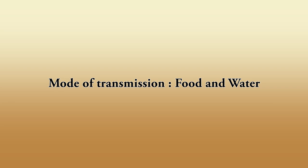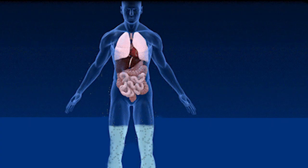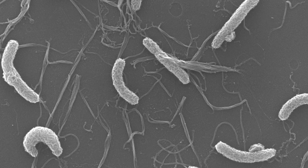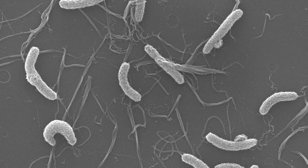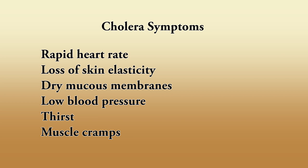Cholera is an infectious disease that causes severe watery diarrhea, which can lead to dehydration and even death if untreated. The mode of transmission is food and water. Vibrio cholerae, the bacterium that causes cholera, is usually found in food or water contaminated by feces from an infected person. Signs and symptoms include rapid heart rate, loss of skin elasticity, dry mucous membranes, low blood pressure, thirst, and muscle cramps. If not treated, dehydration can lead to shock and death in a matter of hours.